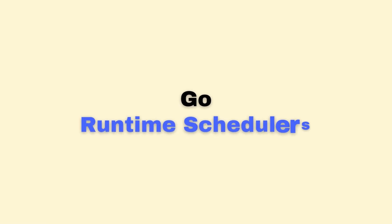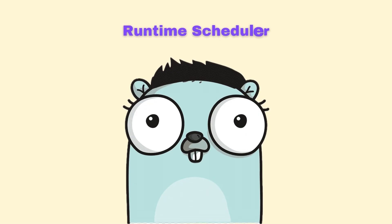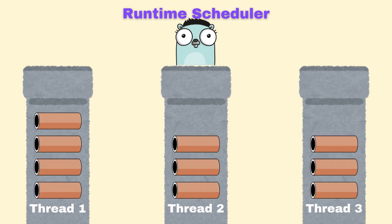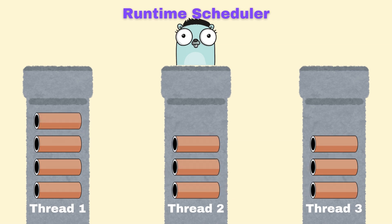How does Go manage all these Go routines efficiently? Go's runtime includes a sophisticated scheduler that maintains and manages Go routines. The scheduler uses a small number of OS threads and multiplexes Go routines onto them. When a Go routine blocks on I/O, the scheduler moves the thread to another Go routine, ensuring efficient use of resources — which is why Go can handle millions of Go routines on modest hardware. However, be careful about blocking operations: if you block a thread with compute-intensive work, you reduce the scheduler's ability to multiplex.